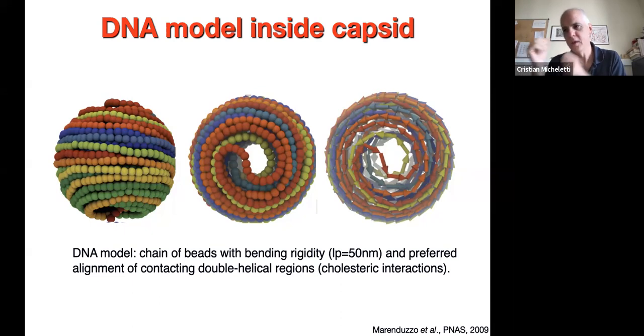These ingredients are, first, excluded volume interactions. You need to treat your chain as a thick chain. Then you need to account for DNA being very stiff on the scale of the viral capsid. The persistence length of DNA is 50 nanometers, the thickness is 2.5 nanometers.